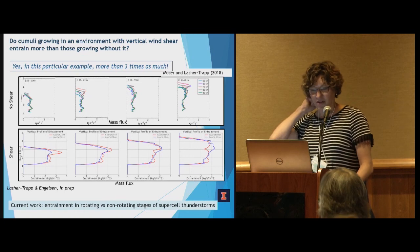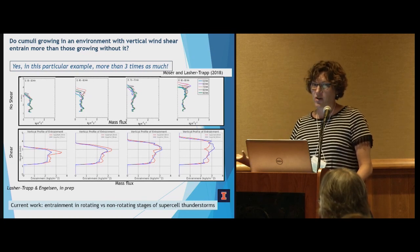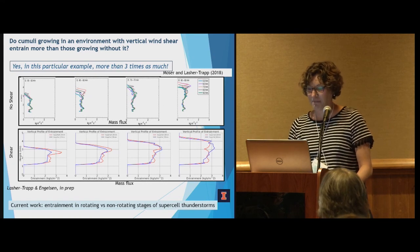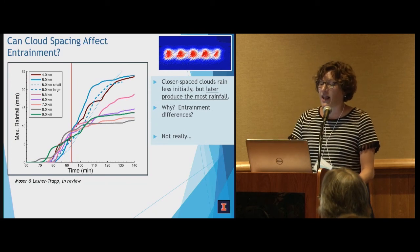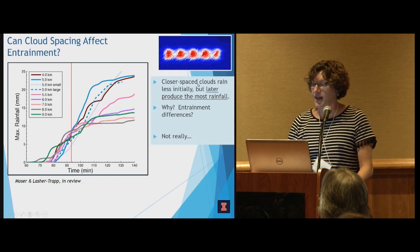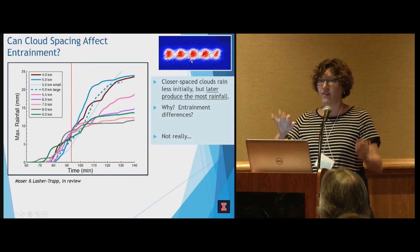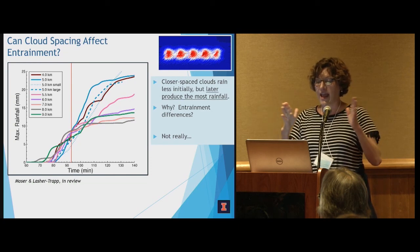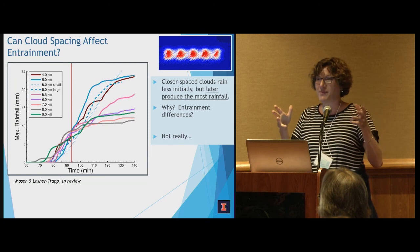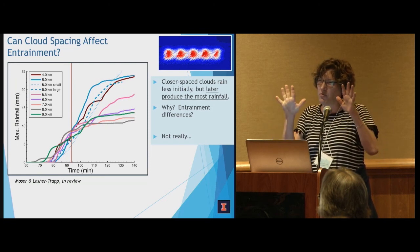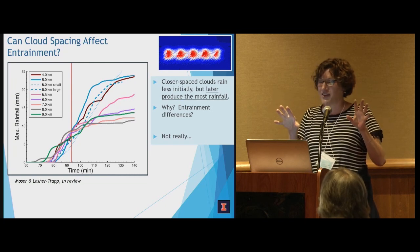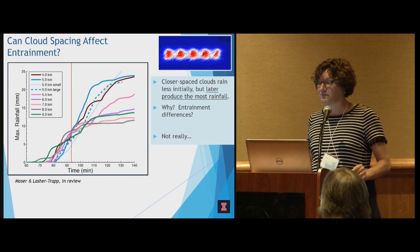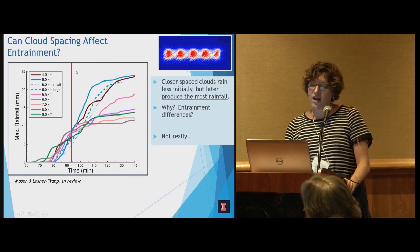For supercell thunderstorm researchers: this is the pre-rotation stage. We're next looking at the rotation stage. There's a whole body of literature saying entrainment should behave quite differently at those stages, and we're going after that next — those are currently running. The second study looks at cloud spacing and how that might affect entrainment. Daniel basically placed five hot spots in the model, moving them farther apart or closer together, so a cloud forms over each hot spot and you measure how much those clouds are entraining dry air into their centers.